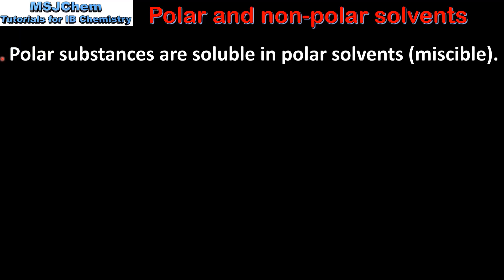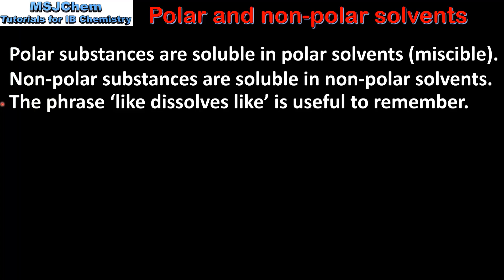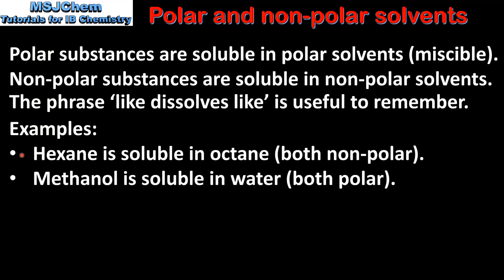Polar substances are soluble in polar solvents, which means that they are miscible. Non-polar substances are soluble in non-polar solvents. The phrase 'like dissolves like' is useful to remember. For example, hexane is soluble in octane because they are both non-polar, and methanol is soluble in water because they are both polar.